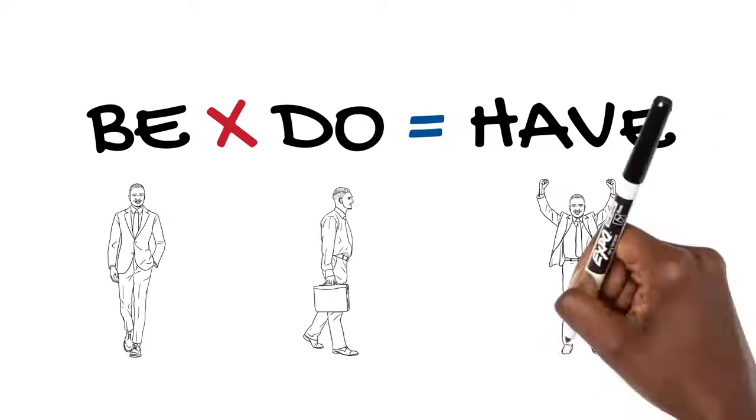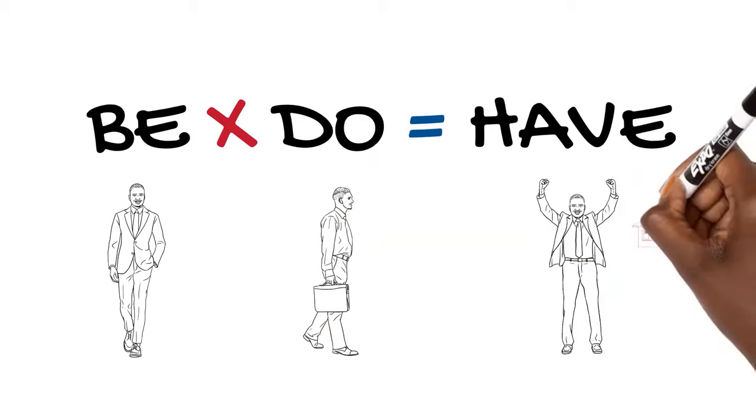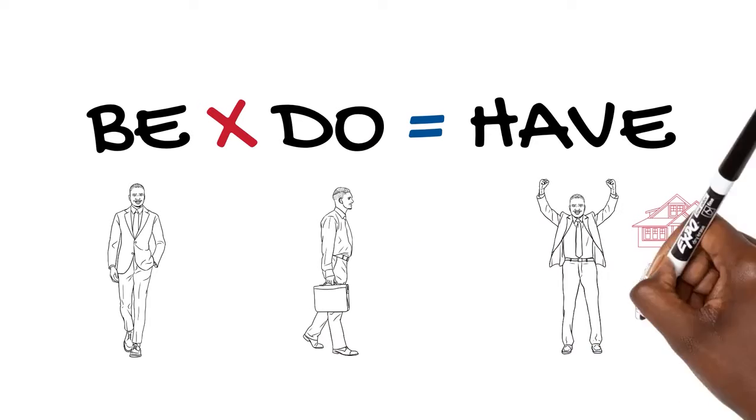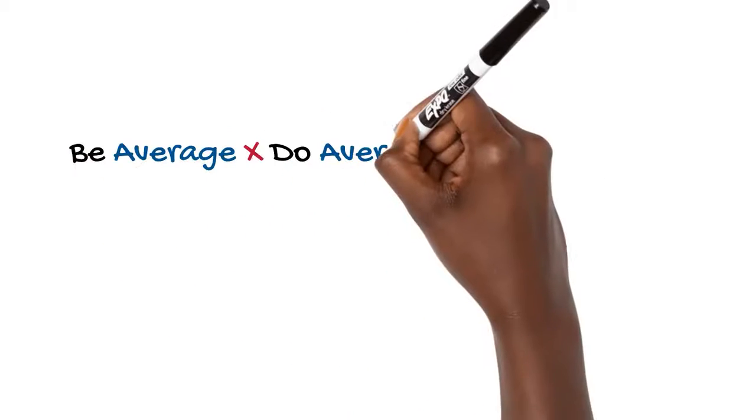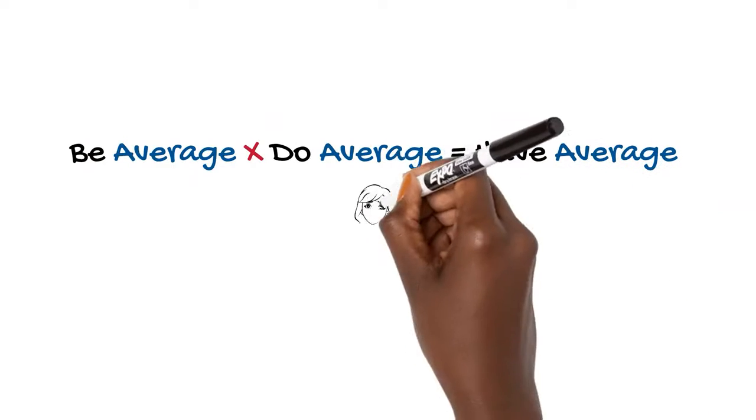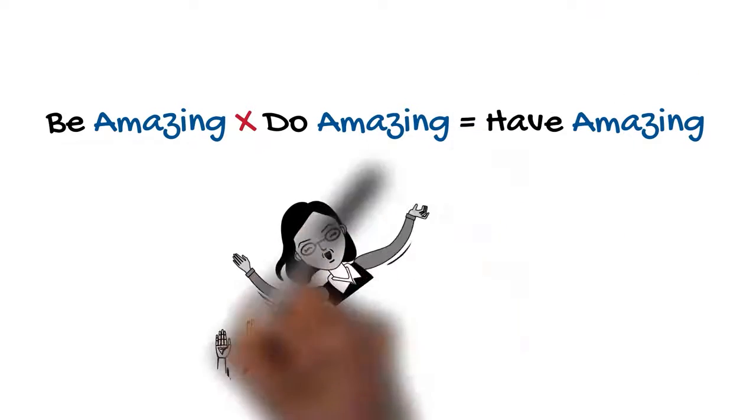Be times do equals have. Who you are multiplied by what gets done determines what you have. Be average times do average equals have average. Be amazing times do amazing equals have amazing.